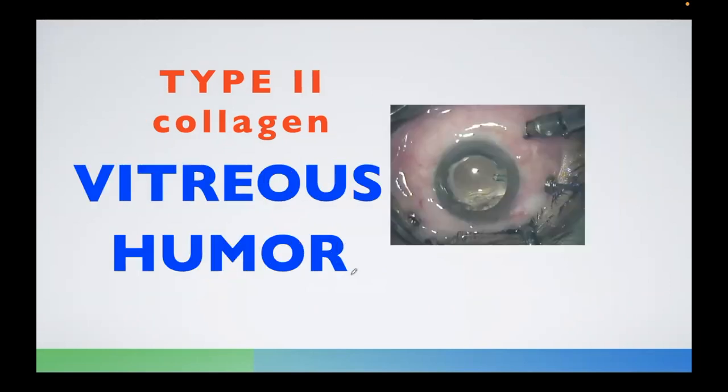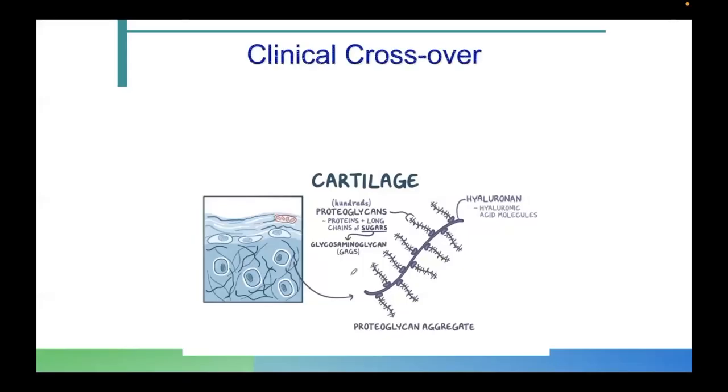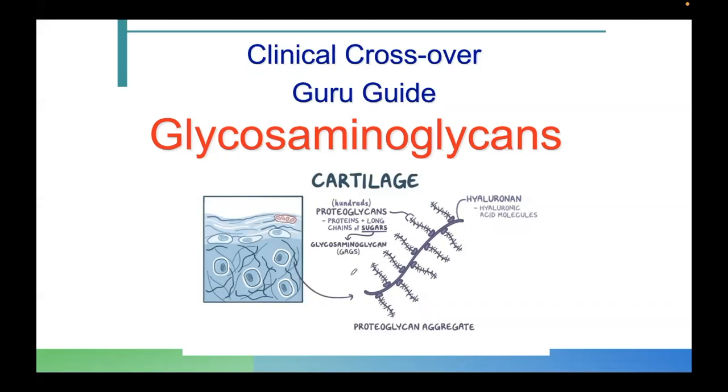If we dig deeper into the textbook, another example of a type 2 collagen is the vitreous humor. The vitreous humor is also comprised of type 2 collagen, as well as Descemet's membrane. This is your guru guide. And we're going to end this session, a very short session, with some must-knows regarding the GAGs or the glycosaminoglycans. What is the other name of the GAGs or the glycosaminoglycans? We call them the mucopolysaccharides.